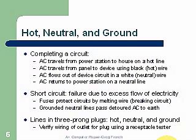Hot, neutral, and ground — completing a circuit. AC travels from a power station to a house on a hot line, and from the panel to the device using a black or hot wire. AC flows out of a device circuit on a white or neutral wire, and returns to the power station on the neutral line.